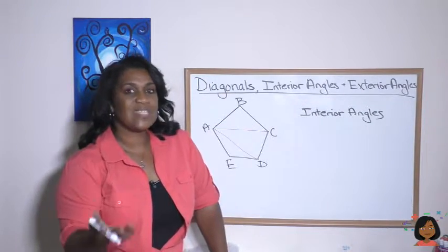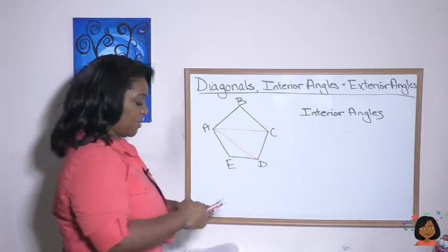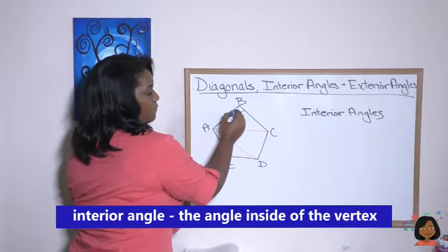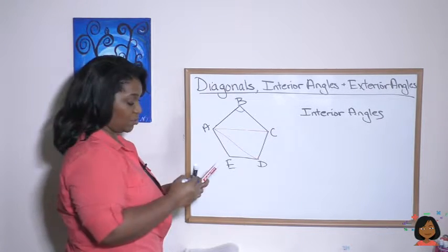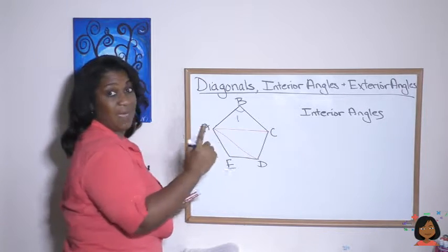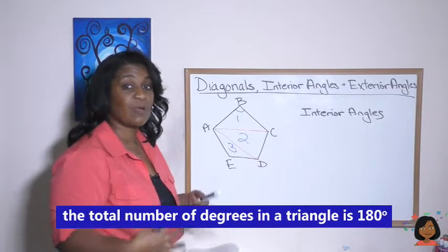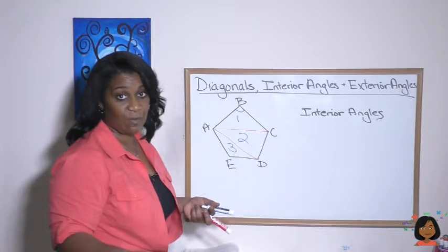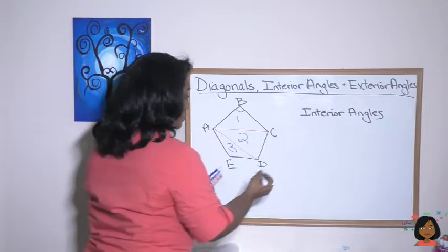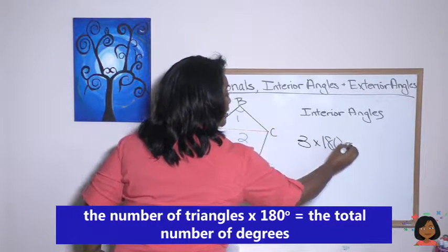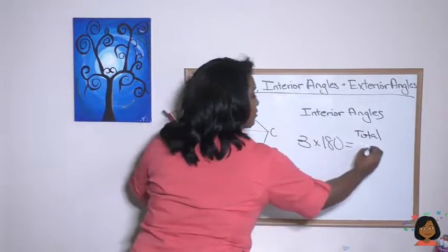How can we use diagonals to find the interior angles of a polygon? The interior angle is the angle measurement at each vertex. Using diagonals on a pentagon — it has two diagonals — which divides the pentagon into three triangles. We know the total degrees in a triangle is 180, so we do three times 180.